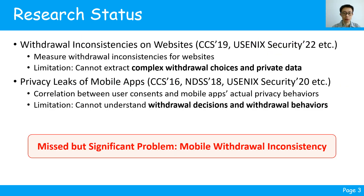Current research is mainly focused on two aspects: withdrawal inconsistencies on websites and privacy leakage detection of mobile applications. Unfortunately, the former primarily measures withdrawal inconsistencies on websites, rendering existing methods inadequate for extracting complex withdrawal choices and privacy data from mobile apps. The latter examined the correlation between users' choices and the actual privacy behaviors of mobile apps. However, this research segment neglected any study related to withdrawal options, failing to understand the withdrawal options and withdrawal behaviors. We found there is still a significant problem of detecting mobile withdrawal inconsistencies.